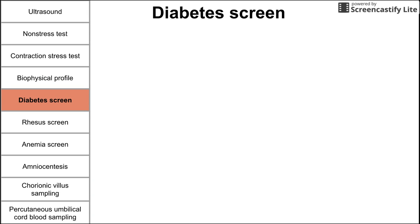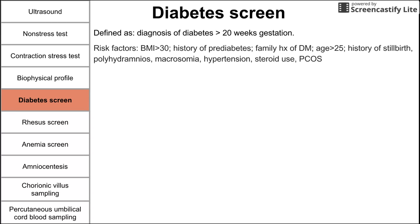Another test during pregnancy is the diabetes screen. Diabetes in pregnancy is defined as diabetes diagnosed after 20 weeks gestation, called gestational diabetes. Risk factors include a BMI over 30, a history of prediabetes, a family history of diabetes, age over 25, a history of stillbirth, polyhydramnios, macrosomia, hypertension, steroid use, and PCOS with associated insulin resistance.